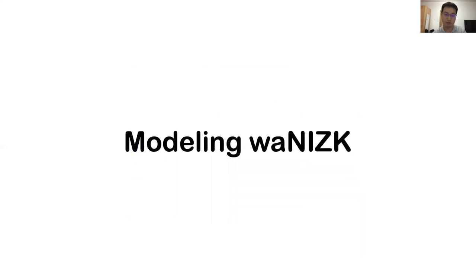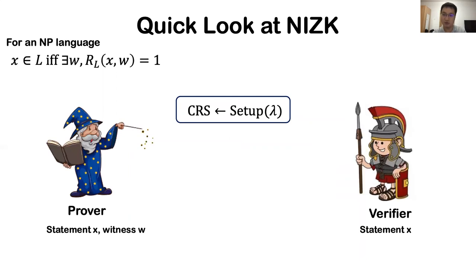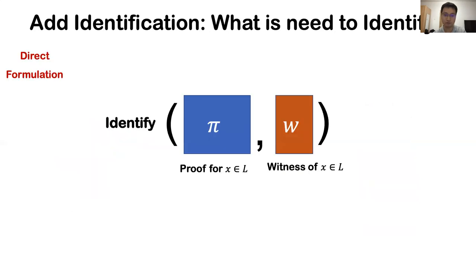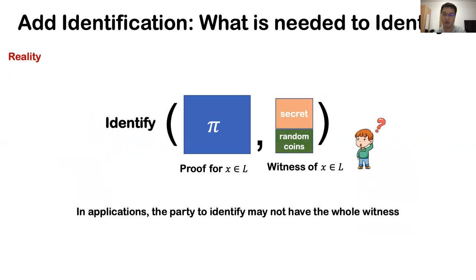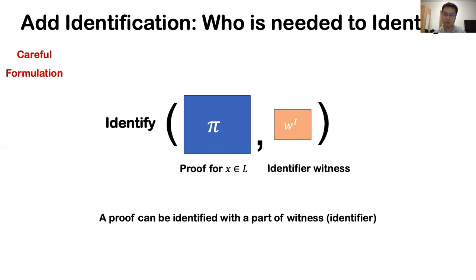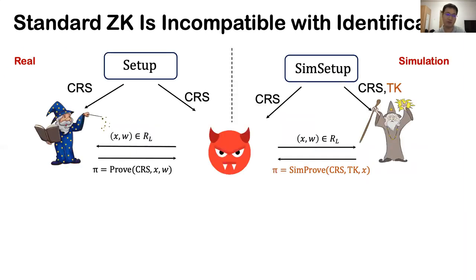Now let's model this new primitive. In standard NIZK, assuming a common reference string, a prover with a witness can create a single string called a proof to convince the verifier the statement is true. The identification functionality we consider is to enable identifying whether a proof is generated using a specific witness. The straightforward formulation is to take both the proof and witness as inputs. However, in many applications the witness is structured — it consists of a secret part and public constraints. The user is only supposed to have the secret and does not have the whole witness. To make identification more useful, we abstract the notion of an identifier witness, which is a part of the witness such that the proof can be identified as being generated from a witness that has this identifier.